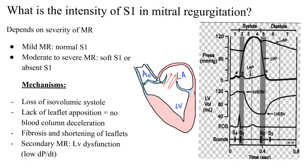What about mitral regurgitation which is secondary, also known as functional mitral regurgitation? It occurs in events of LV dysfunction. When there is LV dysfunction, there is usually a globular shape of the left ventricle — it loses its normal shape and becomes more globular. More importantly, it tends to tether the mitral leaflets, commonly the posterior mitral leaflet, but also both posterior and anterior mitral leaflets.